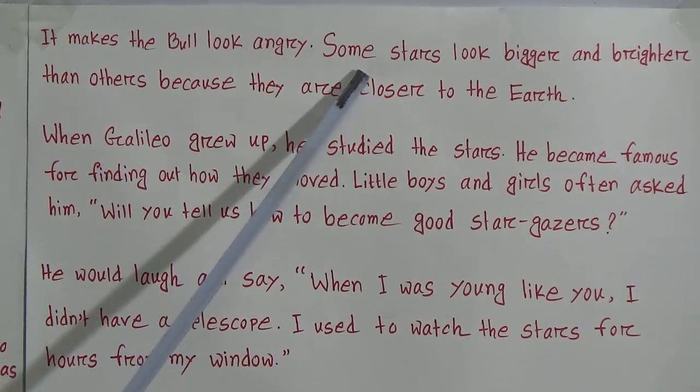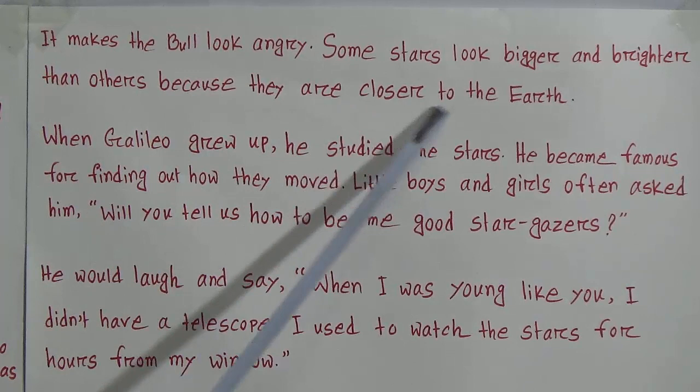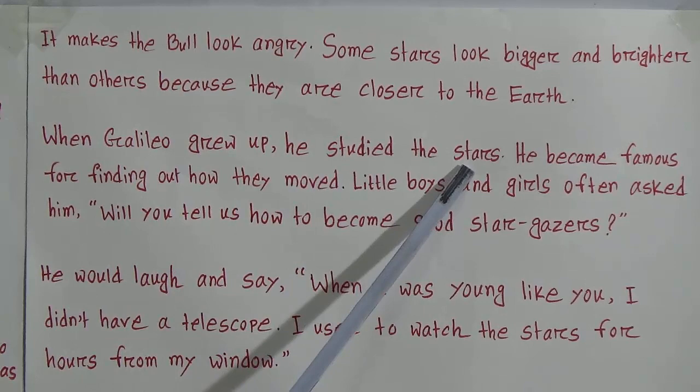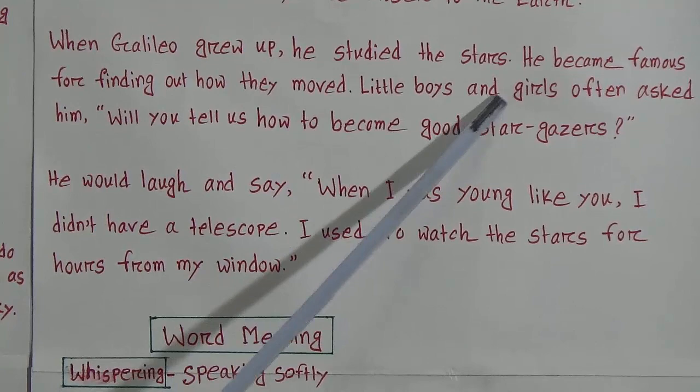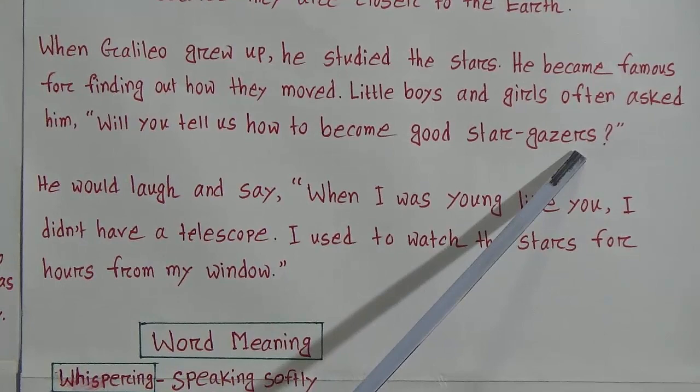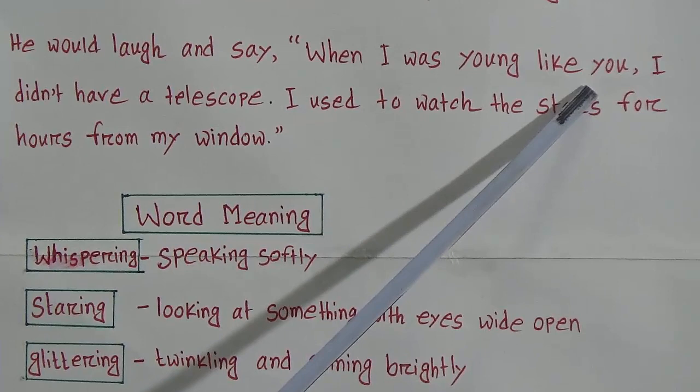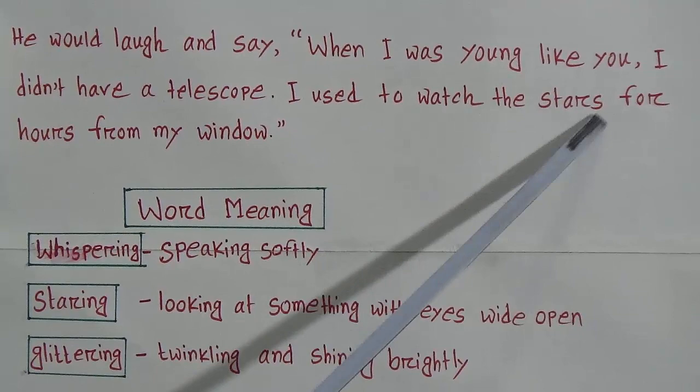The eye of the Bull is a red star, and it makes the Bull look angry. Some stars look bigger and brighter than others because they are closer to the Earth. When Galileo grew up he studied the stars and became famous for finding out how they moved.